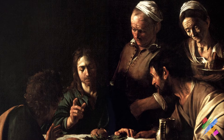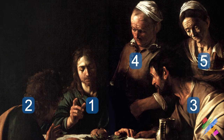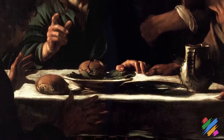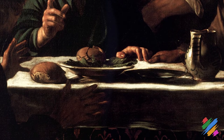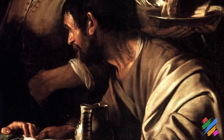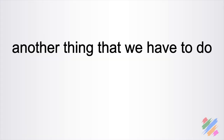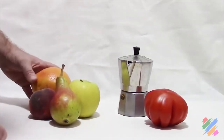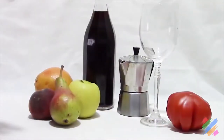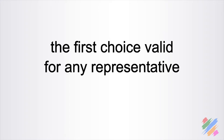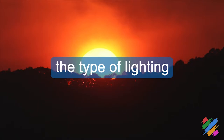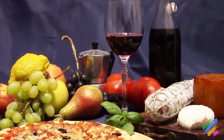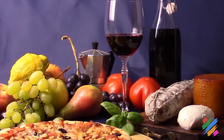In the Caravaggio's painting, his choices were the number of people inside the scene, the type and quantity of food on the table, how the people should be dressed, and so on. Another thing we have to do once the subject is defined is to study how we are going to arrange our scene. The first choice, valid for any representative painting, is the type of lighting we want to use and, most of all, the direction where it will come from.